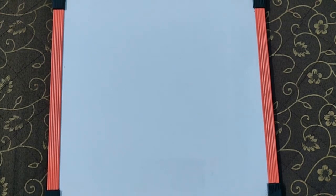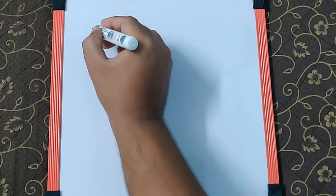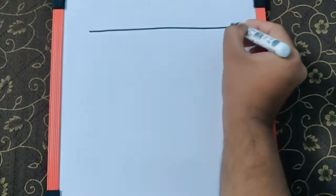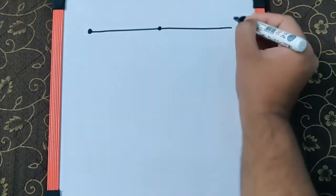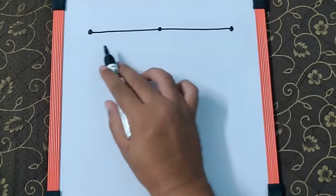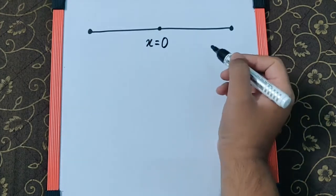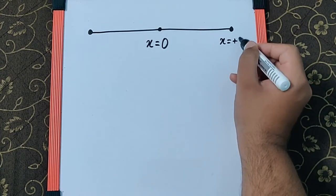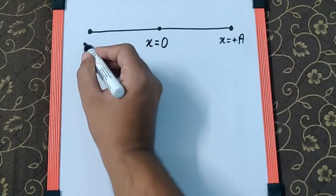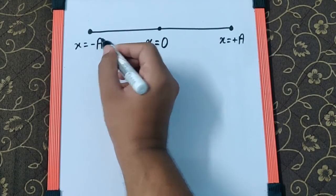In this video, I'm going to guide you with the basic information about the values of displacement, velocity, and acceleration at different positions while a particle is performing SHM. The particle performs SHM along a line where the mean position is x = 0, the positive extreme is x = +a, and the negative extreme is x = -a.